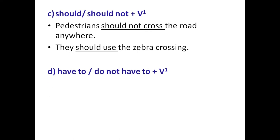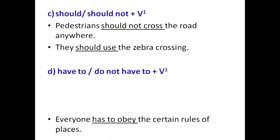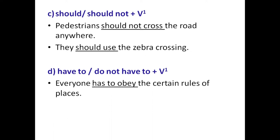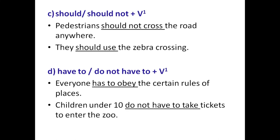Structure D is have to or do not have to plus V1. Example: everyone has to obey the rules of places — has is used because 'everyone' takes a singular verb. The structure is have to plus V1. Another example: children under 10 do not have to take tickets to enter the zoo — children under 10 can enter without buying tickets. The structure is do not have to plus V1, which indicates prohibition.